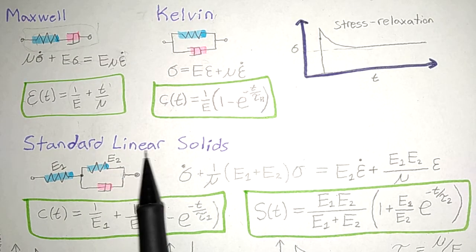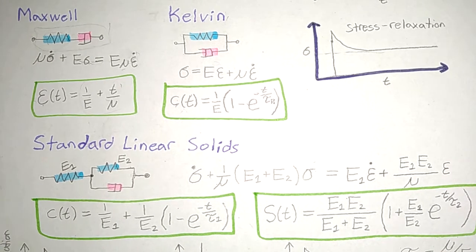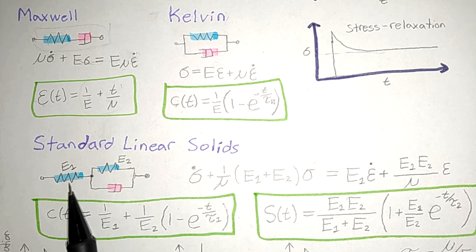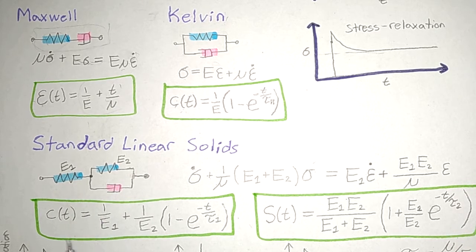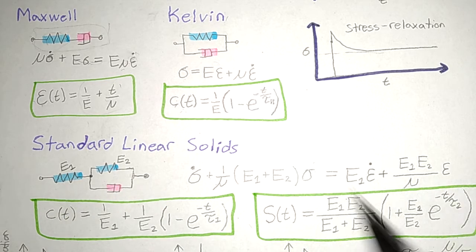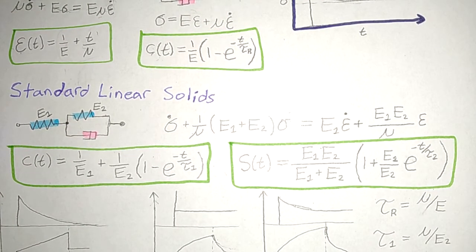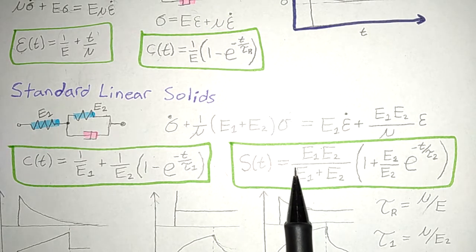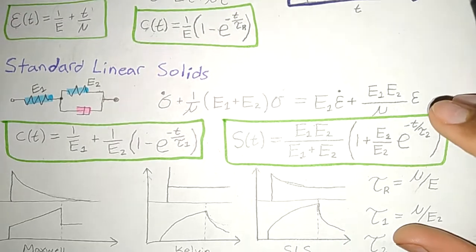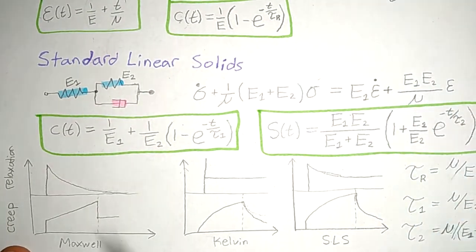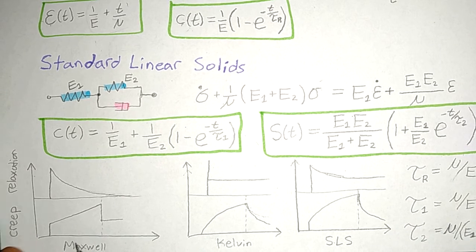The third model is the Standard Linear Solid (SLS), which is the most common one because it explains most materials, especially biological ones, very accurately. It is a combination of Maxwell and Kelvin together. The resulting formula — which I won't derive mathematically here — gives both a creep expression and a stress with respect to time. Let me go into the physical, visual representation of these models.